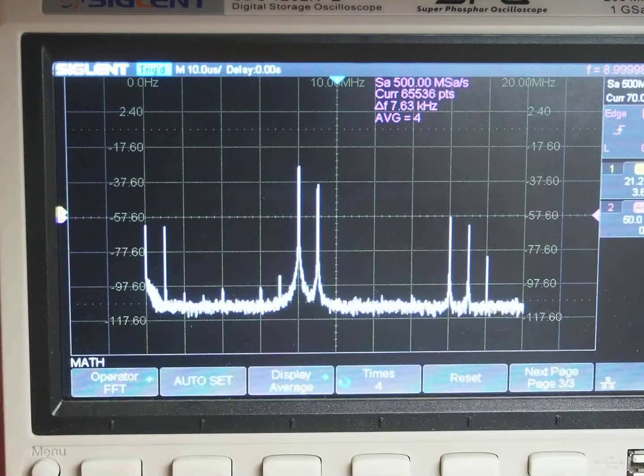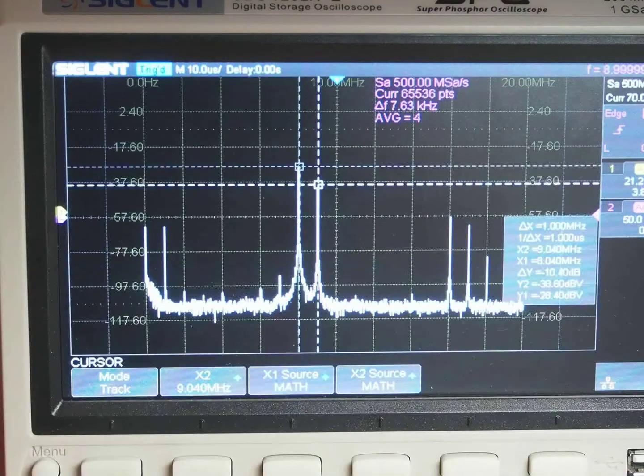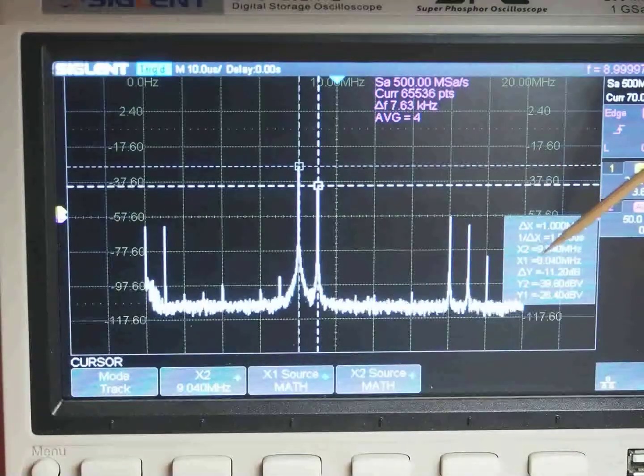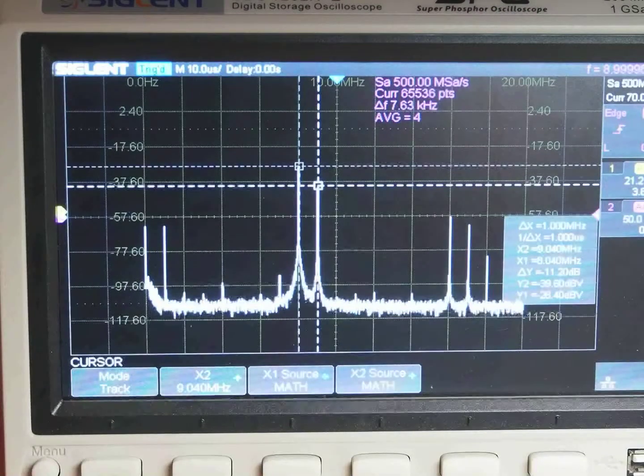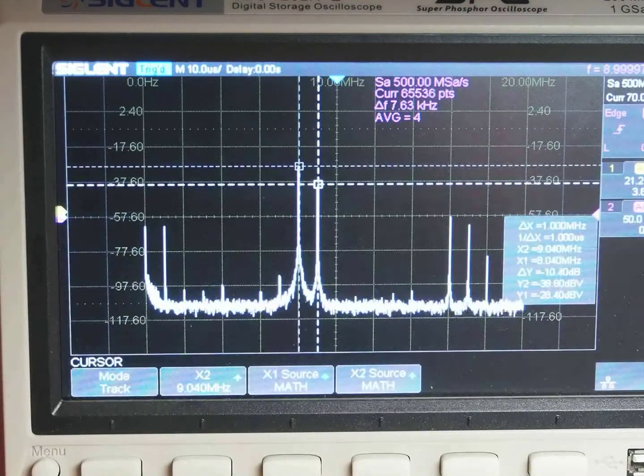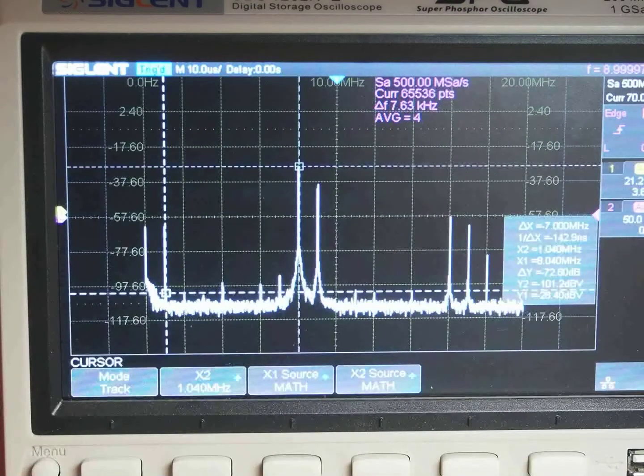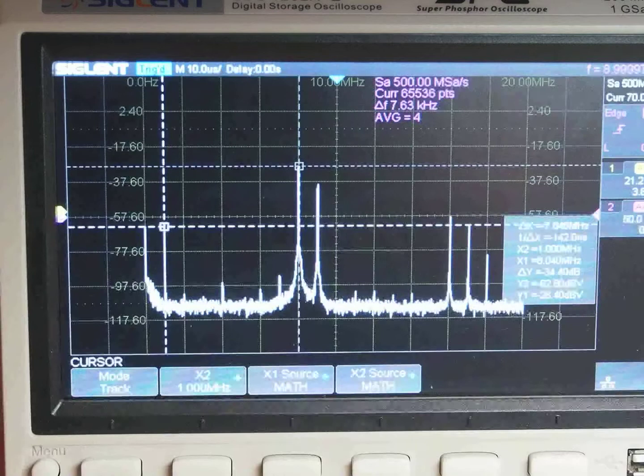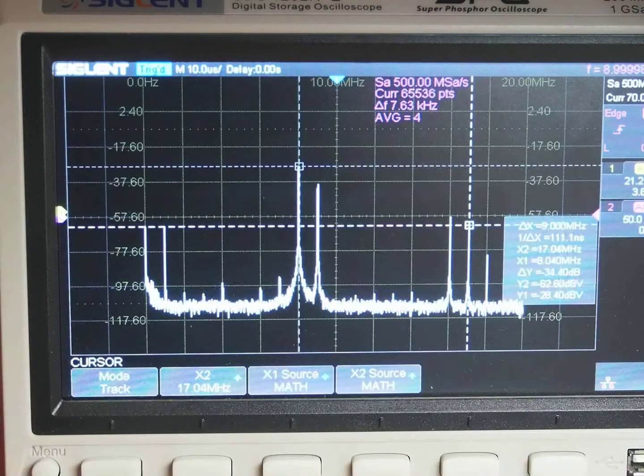Okay, let's take some measurements. Put the cursors on. X1 is at the LO, LO and X2. The LO signal is at X1 at 8 MHz. The signal strength is minus 28.4. RF is at minus 39.6. Let's go to the LO minus RF, it's here, minus 62.8. LO plus RF should be the same according to the theory. Oh wow, minus 62.8.